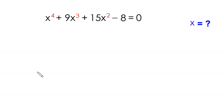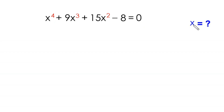Hello everyone, you are welcome to how to solve this very nice quartic equation: x to the power 4 plus 9x cubed plus 15x squared minus 8 is equal to 0. Our job is to find all possible values of x. So let's start.